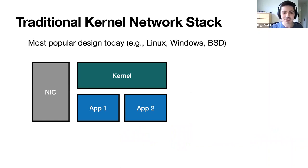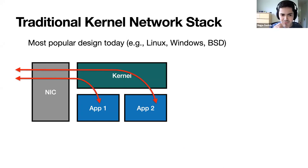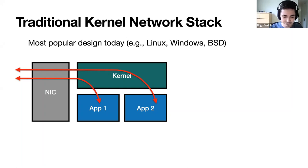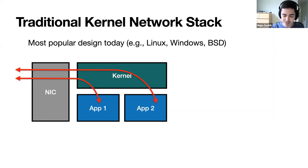For those that are not familiar with how a traditional kernel network stack works, here's how it looks at a very high level. In this model, the kernel sits between the NIC and applications and mediates all the data transfers between the network and these applications. And this model has been very successful — it's been used for many decades, and that's what you can see in all the major operating systems today.